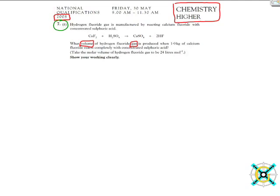It's produced when 1 kilogram, which, as I'm sure you know, in molar calculations you have to convert kilograms into grams. So 1 kilogram equals 1,000 grams. So when 1 kilogram of calcium fluoride reacts completely with concentrated sulfuric acid.